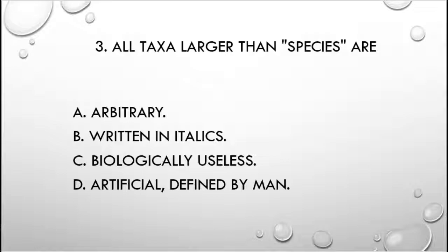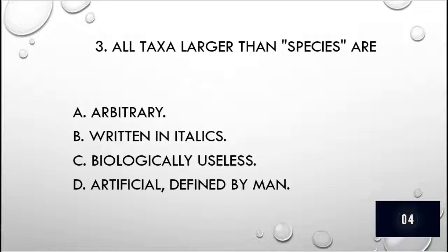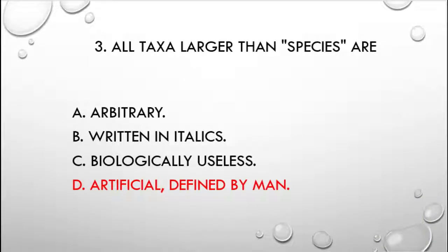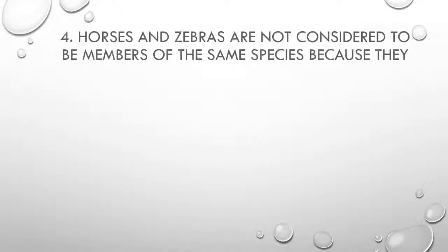Question 3. All taxa larger than species are: A) arbitrary, B) written in italics, C) biologically useless, D) artificial, defined by man. The correct answer is D, artificial defined by man.